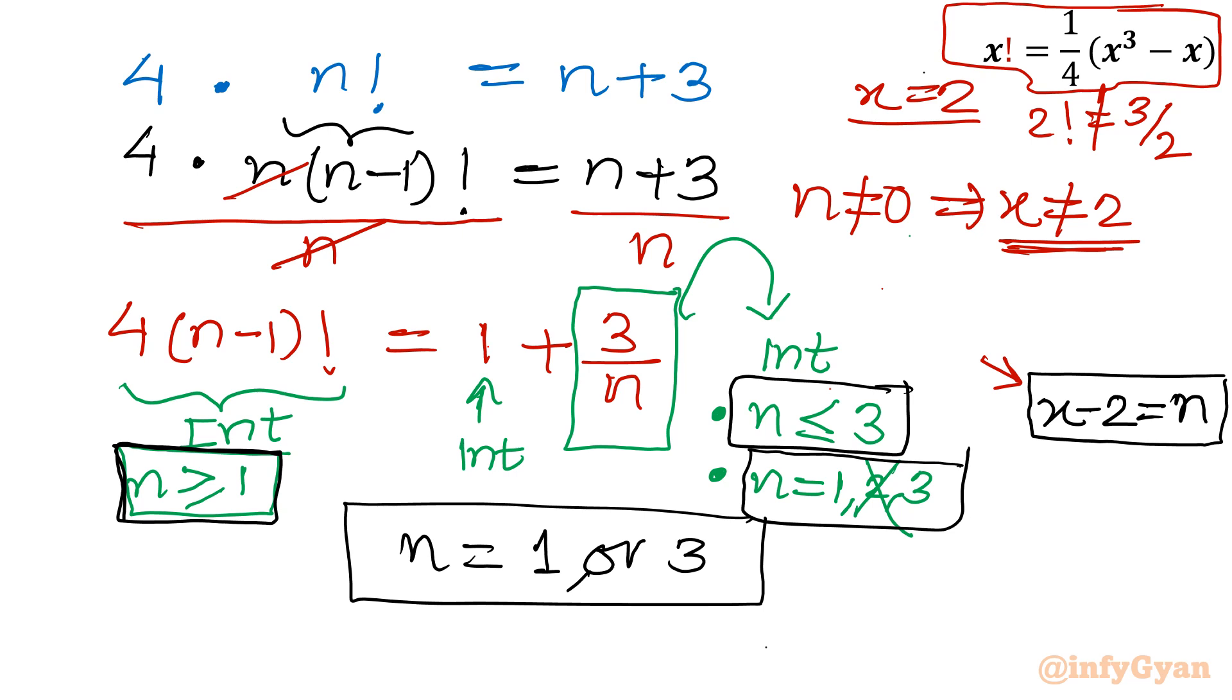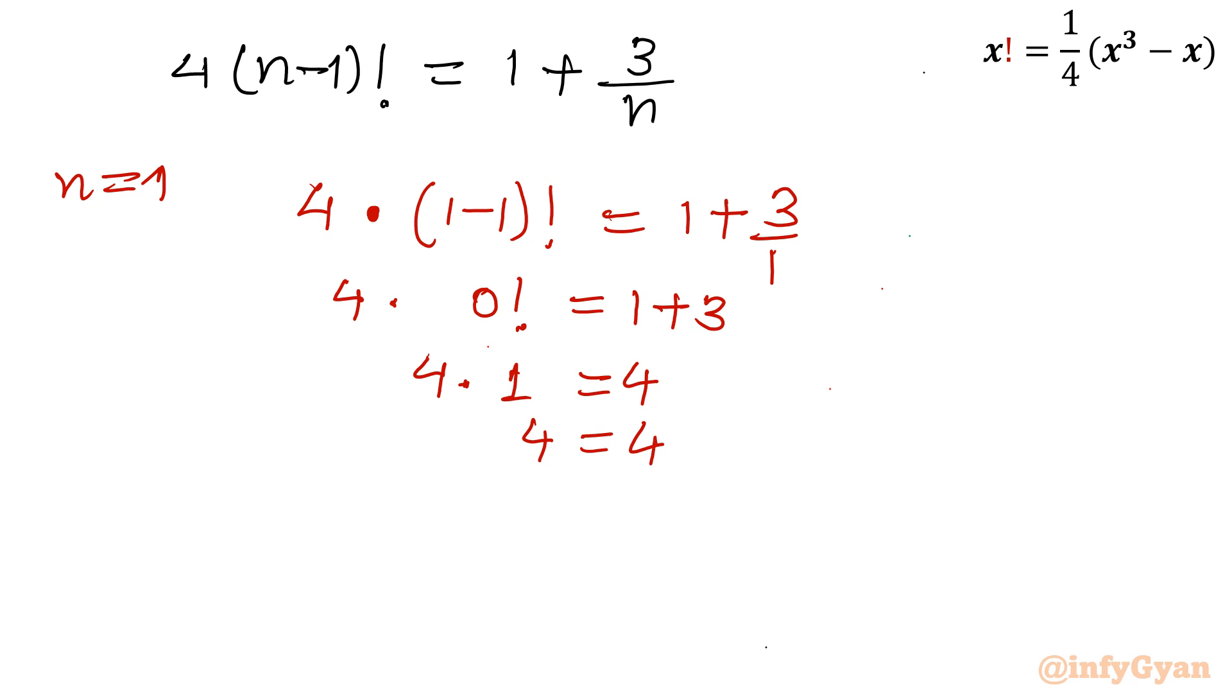So we have to only check 2 values, n equals 1 or n equals 3. Let us check with the original equation: 4 times n minus 1 factorial is equal to 1 plus 3 over n. For n equal to 1, I am checking. So 4 times 1 minus 1 factorial equal to 1 plus 3 over 1. So it is 4 times 0 factorial equal to 1 plus 3. So 4 times 1 equals 4, which gives 4 equal to 4. This is true. So n equal to 1 is true.